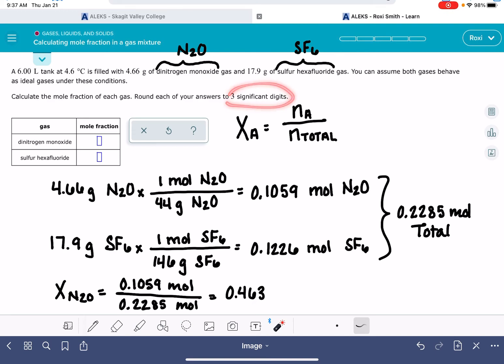ALEKS wants three sig figs. Remember, there's no units on mole fraction because the moles cancel out, 0.463. Now, if I've done this problem correctly, the mole fraction of sulfur hexafluoride should just be 1 minus 0.463, which is 0.537.